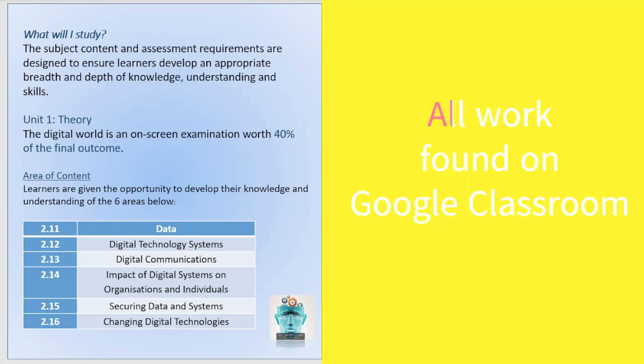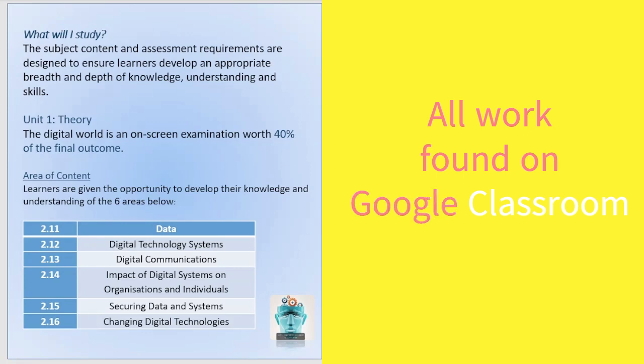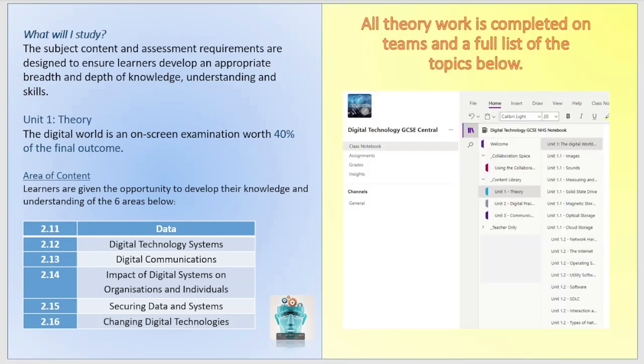There are lots of topics covered, including how images are made, sounds, magnetic storage drives, the internet, how networks are created, the system development life cycle, and types of network. These are really interesting theory topics, and this unit is worth 40% of your qualification.